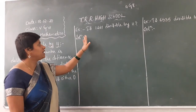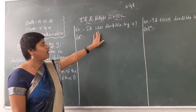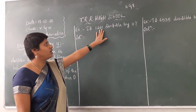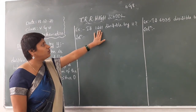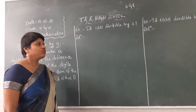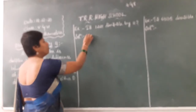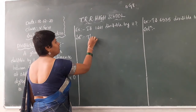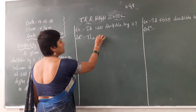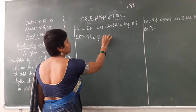Here is our first example: is 1221 divisible by 11? First you have to write down what is the given number. So the given number is 1221.